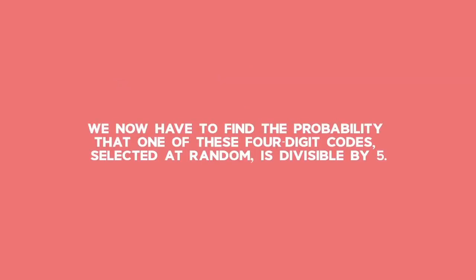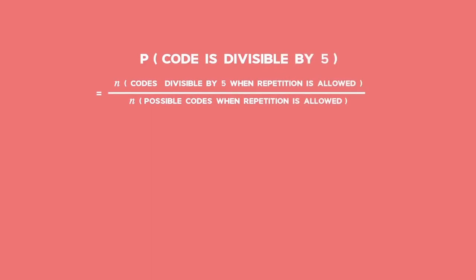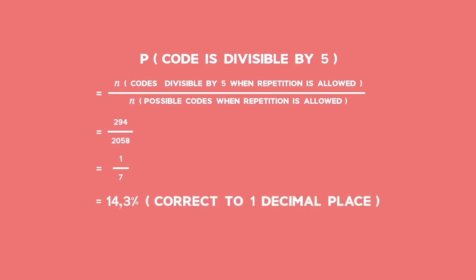We now have to find the probability that one of these four-digit codes selected at random is divisible by 5. The probability that the code is divisible by 5 is equal to the number of codes divisible by 5 when repetition is allowed divided by the number of possible codes when repetition is allowed. This gives a probability of 294 divided by 2058, which simplifies to 1 over 7 or 14.3 percent, correct to one decimal place.